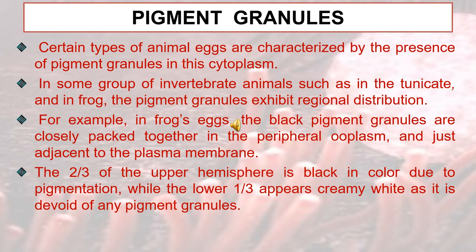Pigment granules: Certain types of animal eggs are characterized by the presence of pigment granules in the cytoplasm. In some groups of invertebrate animals, such as in the tunicates and in frogs, the pigment granules exhibit regional distribution. For example, in frog eggs, the black pigment granules are closely packed together in the peripheral ooplasm, adjacent to the plasma membrane. Two-thirds of the upper hemisphere is black in colour due to pigmentation, while the lower one-third appears creamy white as it is devoid of any pigment granules.